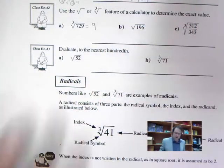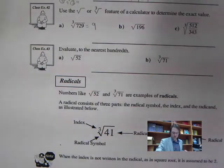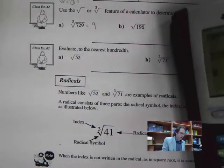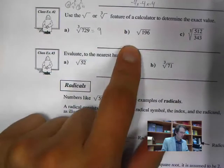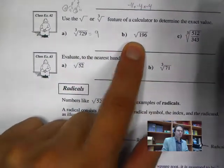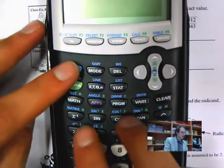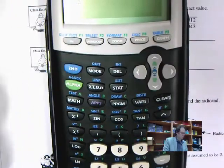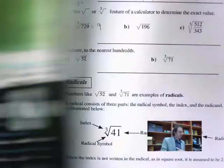There is a cube root function on your calculator, but I tend not to use it. For the next one, we want the square root of 196. I just use the square root function on 196 and get 14.